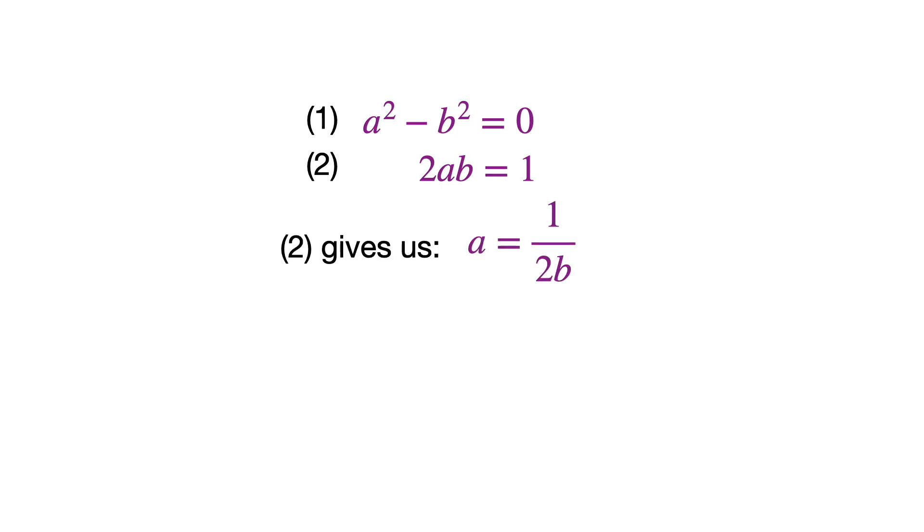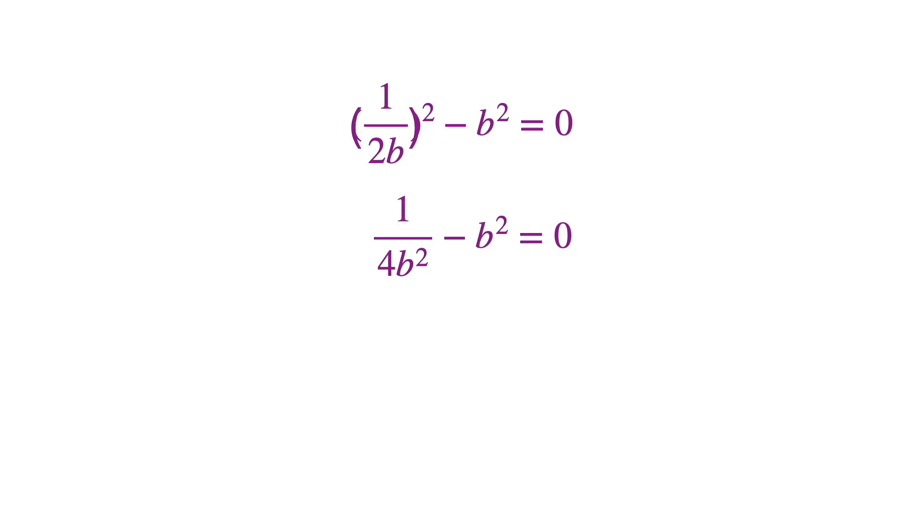Equation 2 gives us a is 1 divided by 2b. And then substituting that in for a in equation 1 gives us an equation only involving b. Let's solve this equation for b. 1 over 2b quantity squared is 1 over 4b squared. Now we'll multiply both sides by 4b squared.